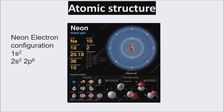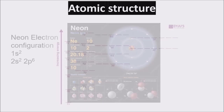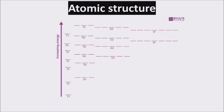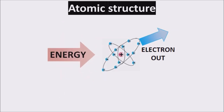The outer electrons are those leading the chemical properties of an element, and they are called valence electrons. Orbitals have different levels of energy, so we have to give energy to an electron to make it jump to a higher shell. If we give enough energy to an electron, we can make it free, so it is not bound to the atom anymore and it is free to move.